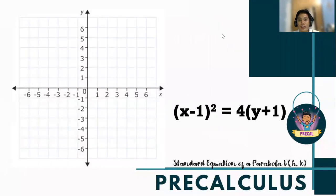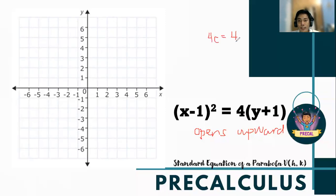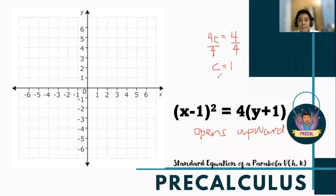Now let's have an example on how to graph parabolas with vertex at (h,k). First, determine the opening of the parabola. Based on the formula, the opening is either upward or downward. This parabola opens upward because the value of 4c is equal to 4. Dividing both sides by 4, we get c = 1. Therefore, the distance from the vertex to the focus is 1 unit, and the distance from the vertex to the directrix is also 1 unit, while the length of the latus rectum is 4 units.